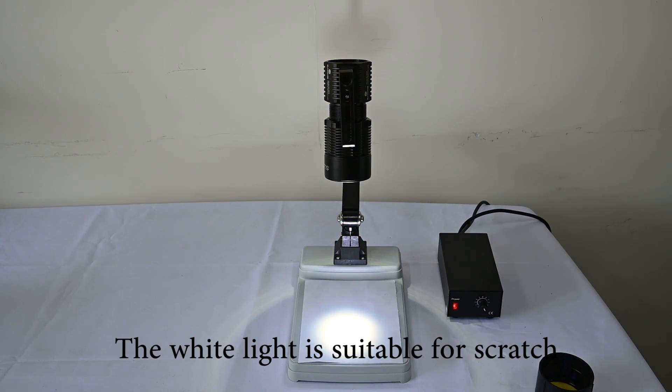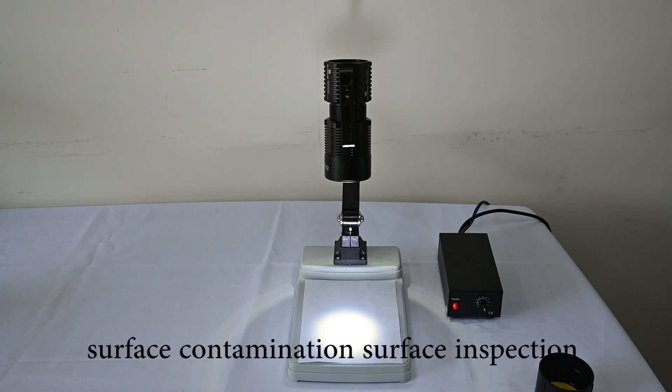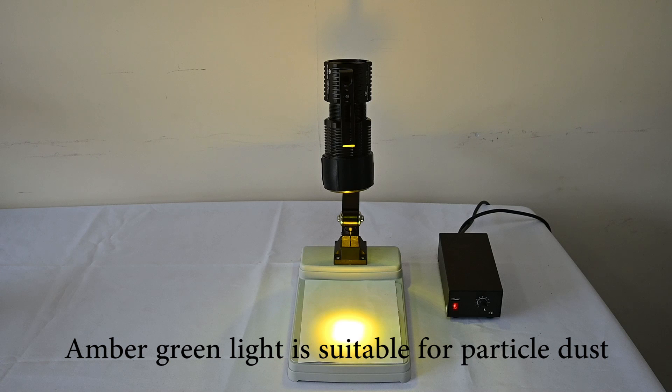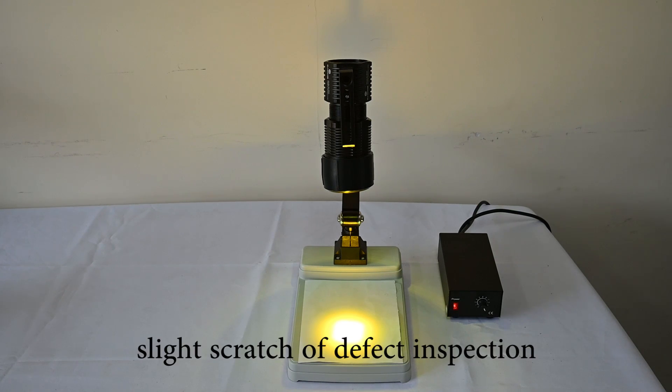The white light is suitable for scratch and surface contamination inspection. Amber green light is suitable for particle dust, slight scratch or defect inspection.